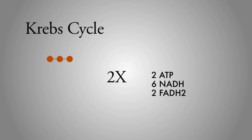The electron storing that has taken place during glycolysis and the Krebs cycle are used in the third and final stage of cellular respiration, the electron transport chain.